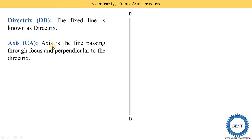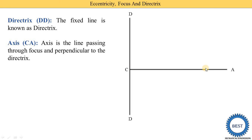What is directrix — it is one fixed line. Second term: axis. Axis is the line passing through the focus and perpendicular to the directrix. Since the directrix is vertical, the perpendicular line is horizontal — a 90-degree line. Here we draw one horizontal line called the axis, denoted as C to A.